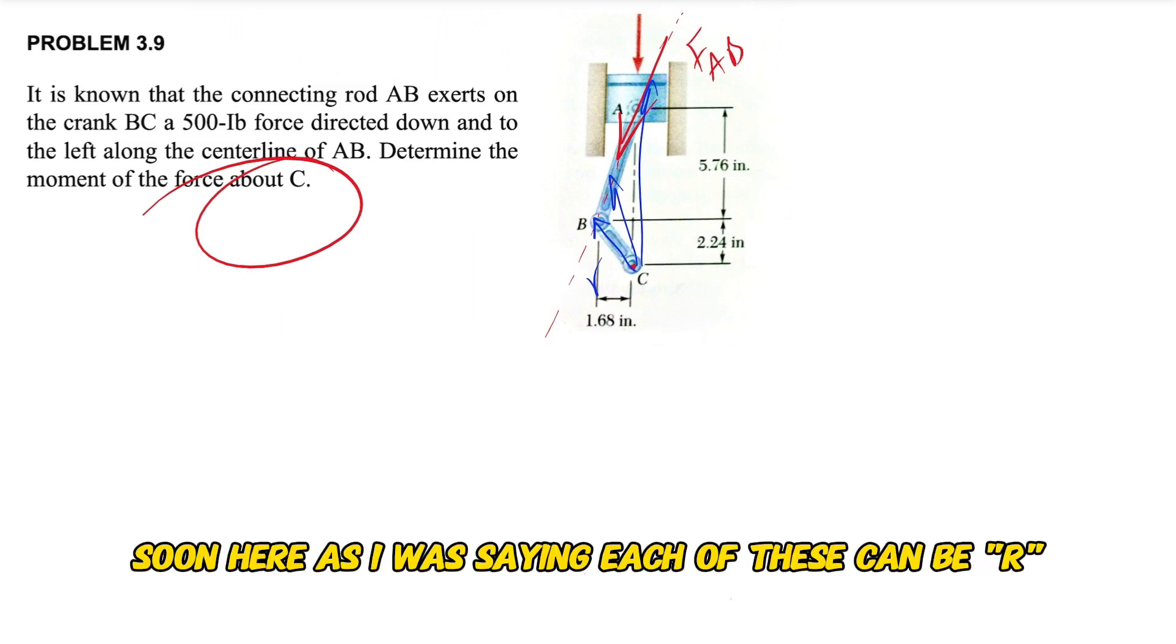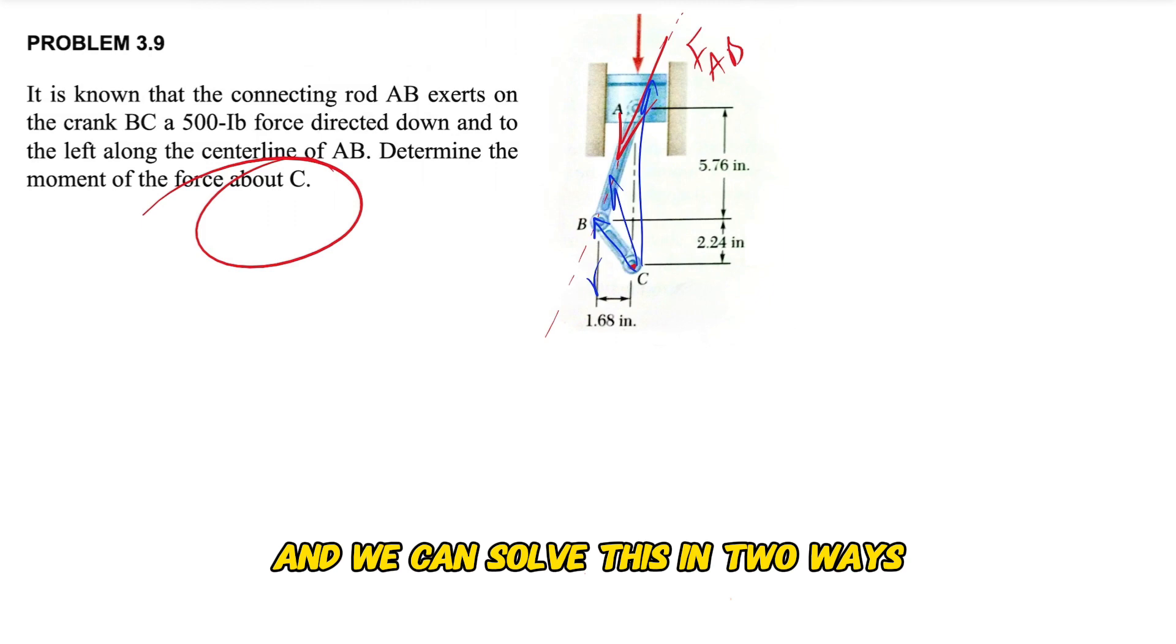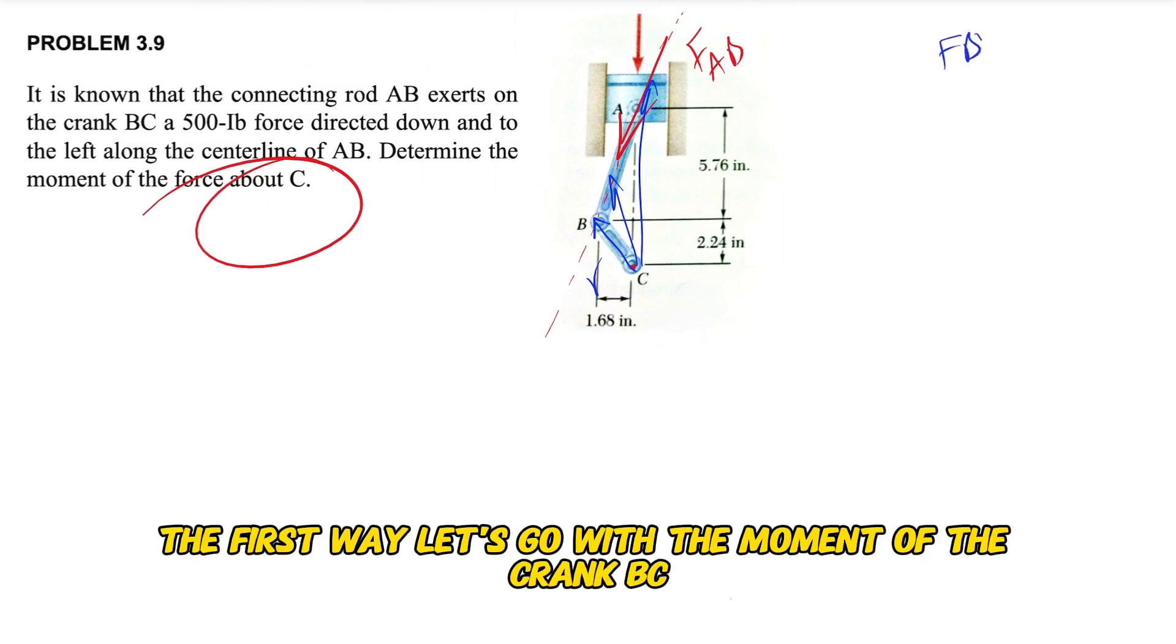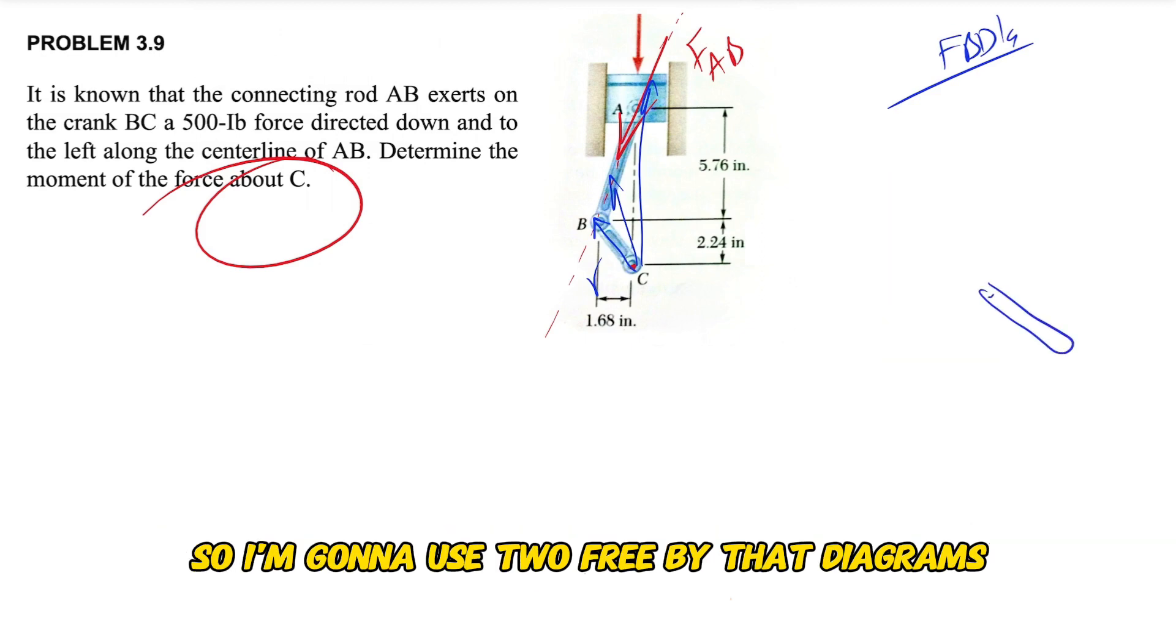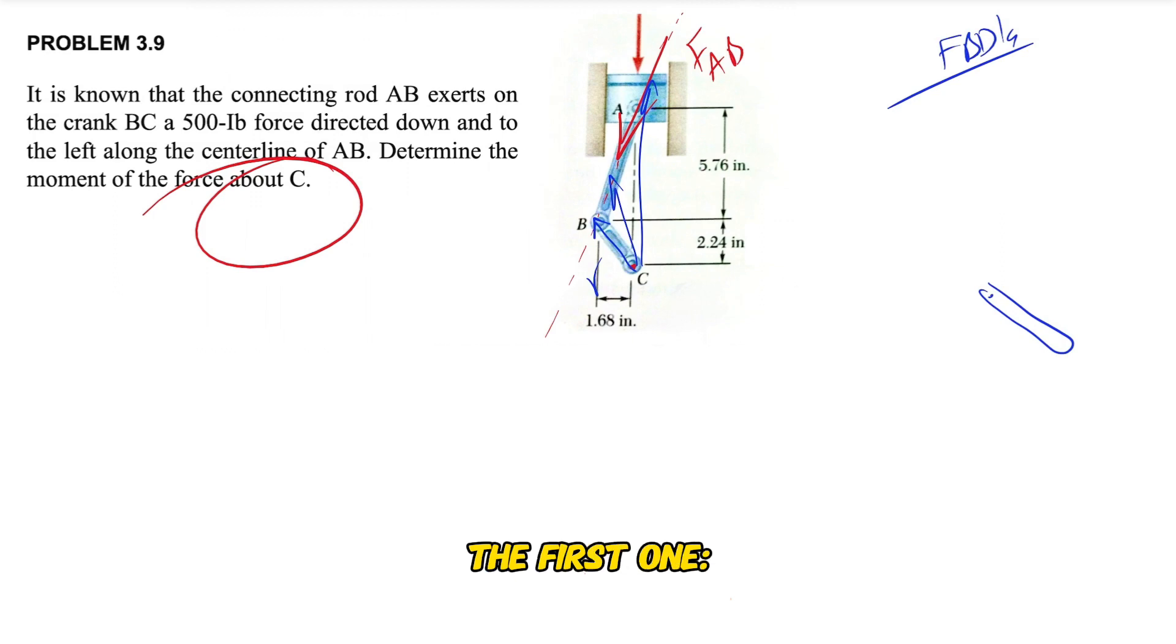So in here, as I was saying, each of these can be r and we can solve this in two ways. First way, let's go with the moment of the crank PC. So I'm gonna use 2D free body diagrams. The first one, we have the crank PC here.